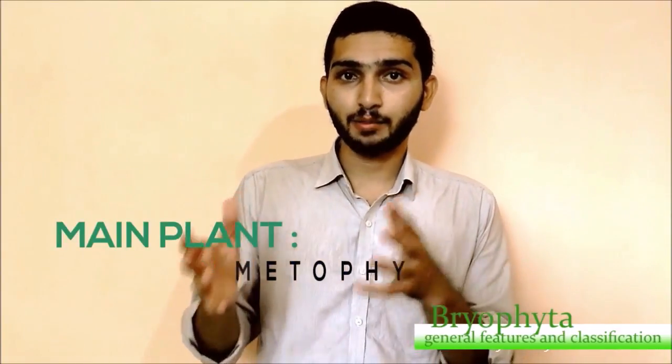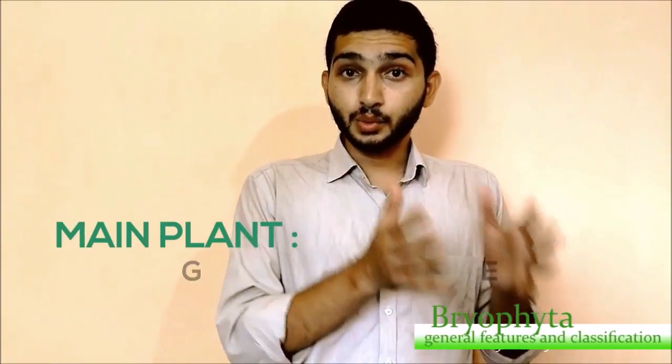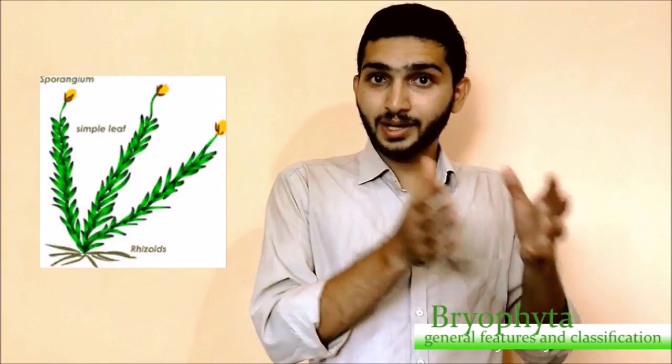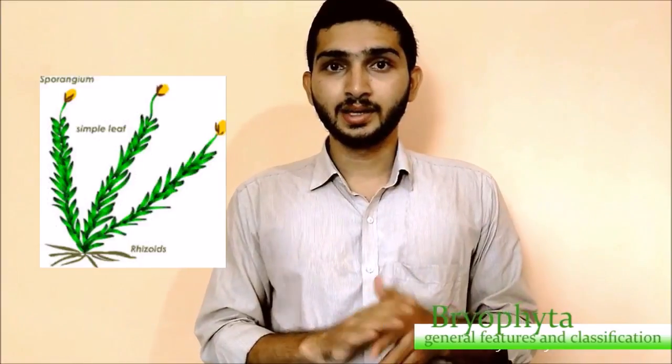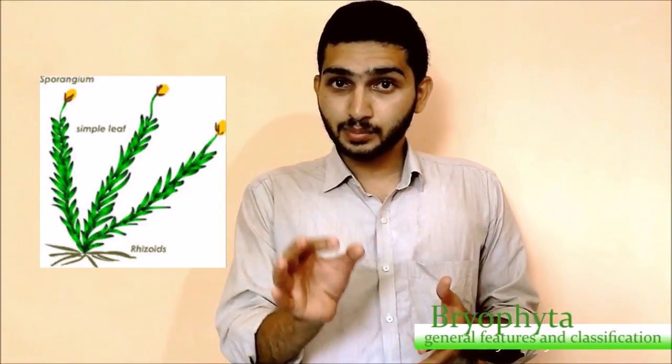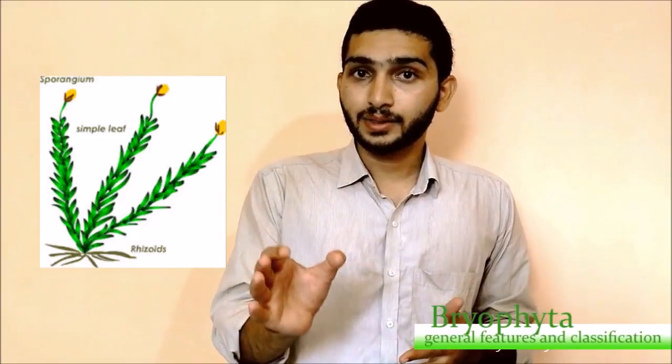The male reproductive structure is the antheridia and the female reproductive structure is the archegonia. These are covered by a multi-layer jacket cell which prevents these structures from dehydration. The main plant body is the gametophyte, where roots are absent and are replaced by rhizoids.